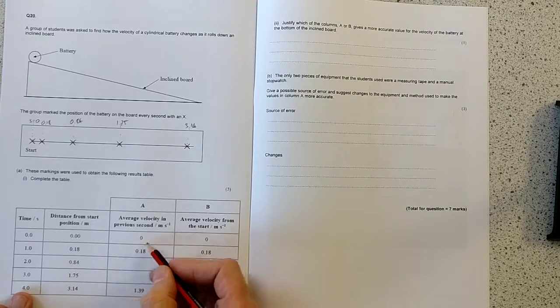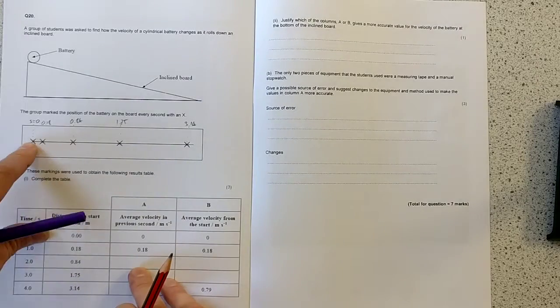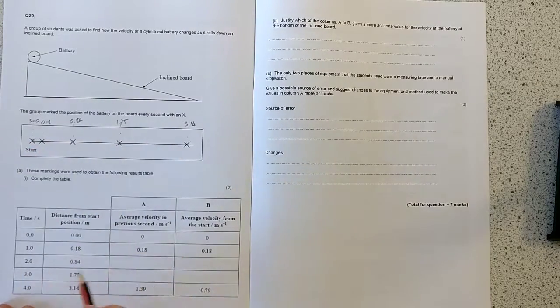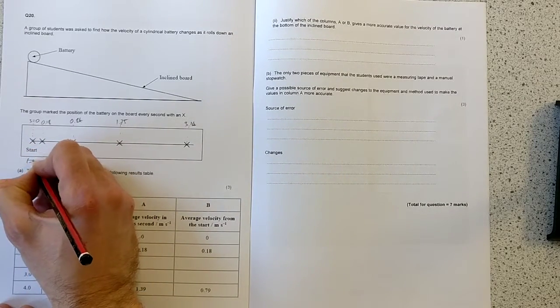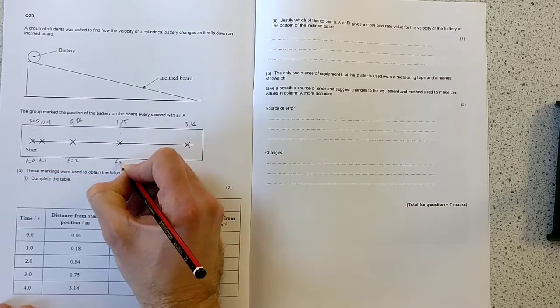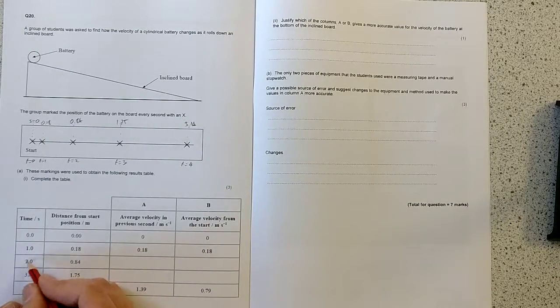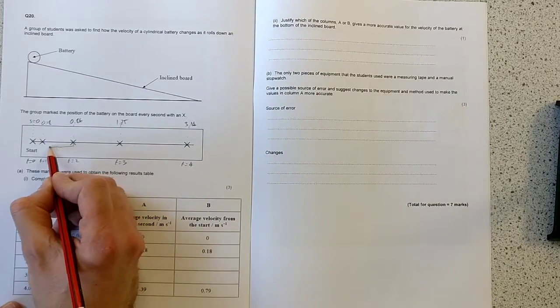So it's asking for the average velocity in the previous second. This is time equals 0, this one is time equals 1, this one is time equals 2, this one is time equals 3, this one is time equals 4. In the previous second, how far has it travelled?